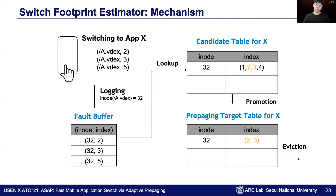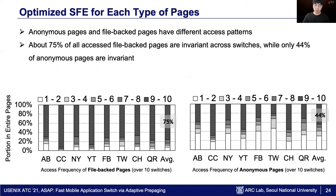One thing to note is that pages have different access patterns depending on the page type. The two graphs show how many times pages are accessed out of 10 different switches. The left shows file-backed pages and the other shows anonymous pages. On average, 75% of file-backed pages are accessed 9 or 10 times out of 10 different switches, whereas only 44% of anonymous pages do so.